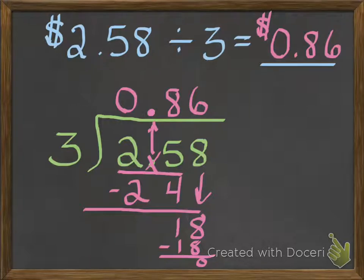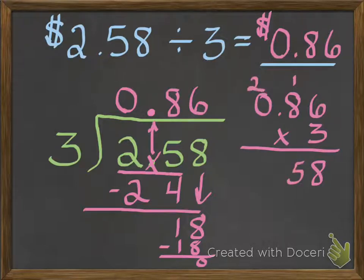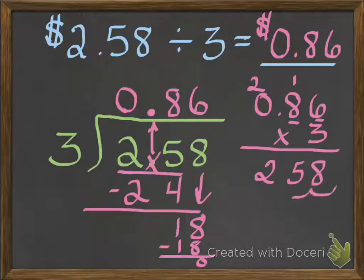I can double-check it to make sure that I'm right. I'm going to take 0.86 and multiply it times three and see if I get the same number that's in the dividend. Three times six is eighteen — carry the one. Three times eight is twenty-four, plus one is twenty-five — carry the two. Three times zero is zero, plus two is two. Then I count how many digits are behind the decimal point — there are two. So I put my decimal point two places over, and I get two dollars and fifty-eight cents. So my quotient of eighty-six cents must be correct.